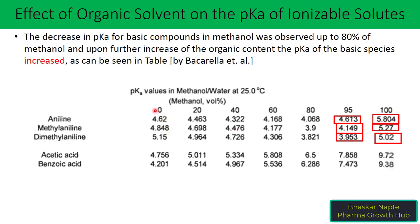For example, at 0% methanol (100% aqueous mobile phase), aniline has a pKa of 4.62. At 20% methanol, the pKa dropped to 4.462, then further to 4.322, then 4.168, then 4.068. The moment the proportion of methanol increased to 95%, a sudden increase in pKa of aniline to 4.613 was observed, and at 100% methanol the pKa of aniline is 5.804.